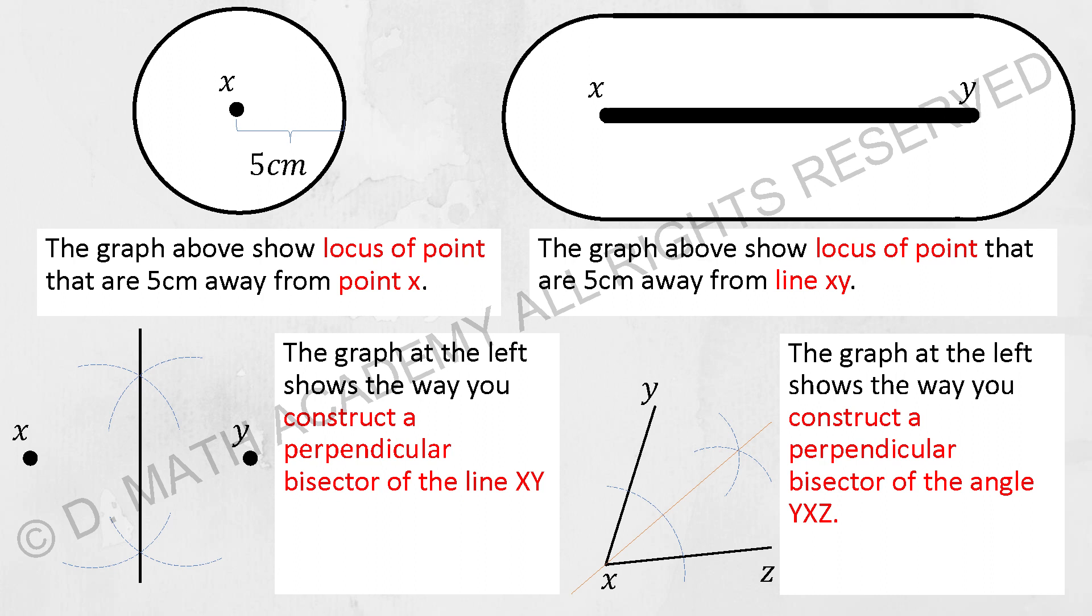The graph above shows a locus of points that are 5cm away from line XY. For this type of question, basically you need to draw two circles, one at the starting from the line which is X, the other at the end of the line which is Y.